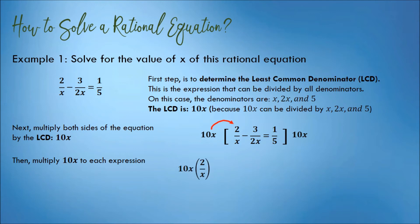10x times 2 over x, 10x times negative 3 over 2x, and 10x times 1 fifth. Simplify the equation and solve for x.